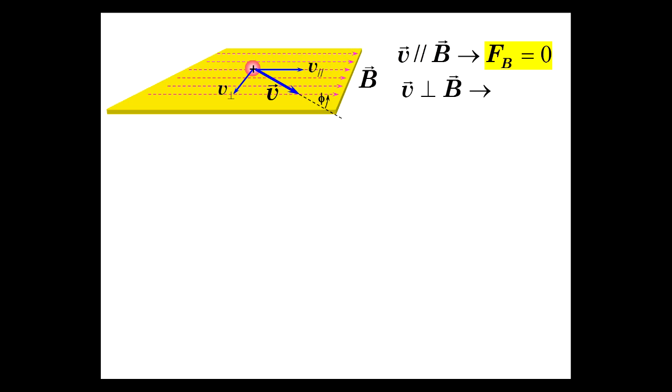So, motion in the direction of the magnetic field, nada. No force. But perpendicular, if the motion of the positive charge is perpendicular, then that produces the maximum magnetic force that you can get for that situation.